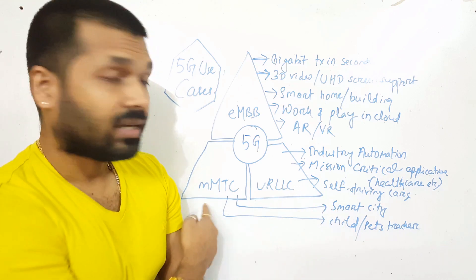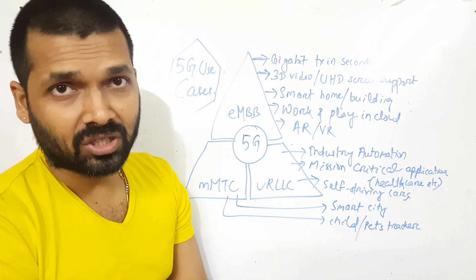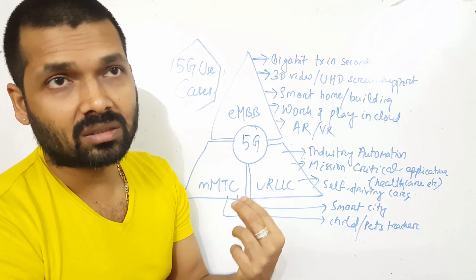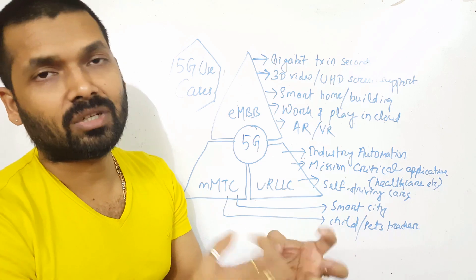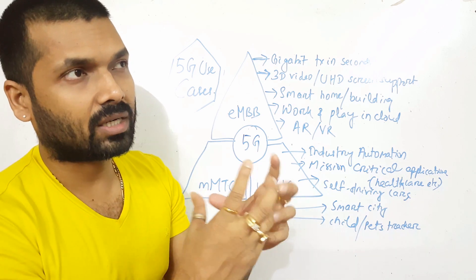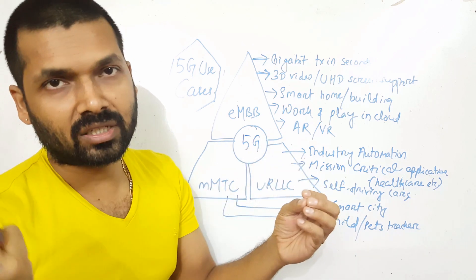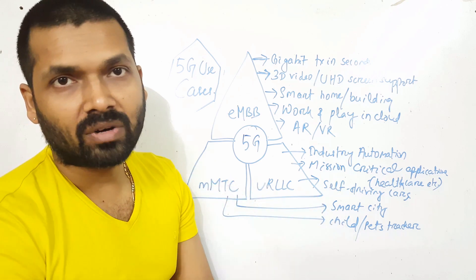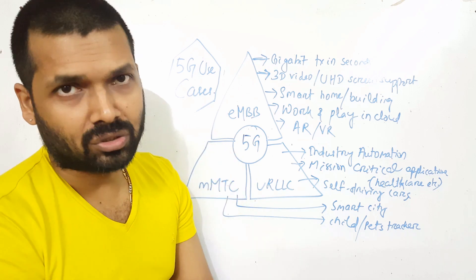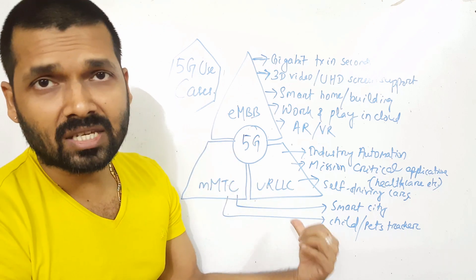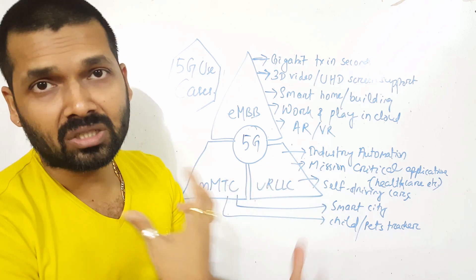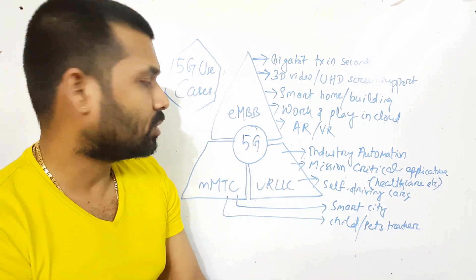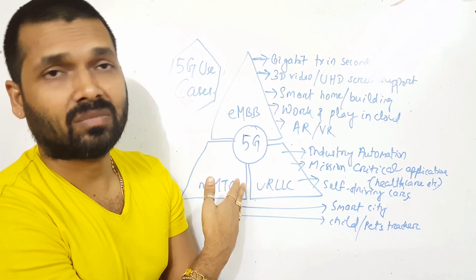Then MMTC or Massive Machine Type Communication - like children tracker or pet tracker, or any kind of machine which can be connected to the network, like electric meter which is connected to the network. Once in a month we get the bills through our mobile phone or mobile applications. All those kinds of intelligent machine applications will be coming and will be used in 5G through MMTC, Massive Machine Type Communication.